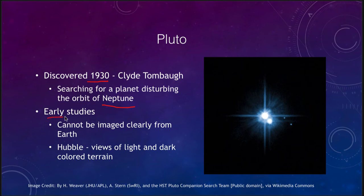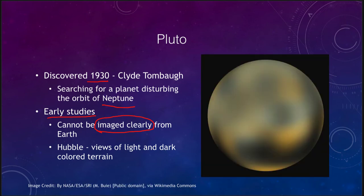Early studies were difficult because Pluto is so small and distant it cannot be imaged clearly from Earth. However, when observed with the Hubble Space Telescope we could see light and dark areas — some tantalizing variations in terrain — but we really didn't know anything in detail about it even with the most powerful telescopes on Earth.